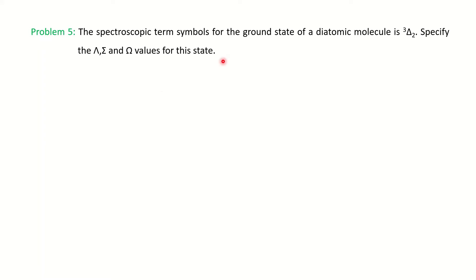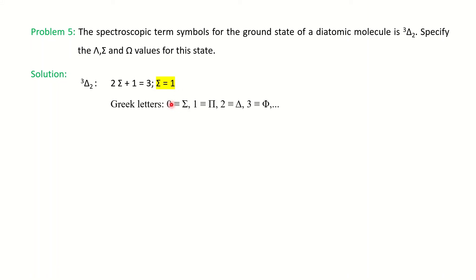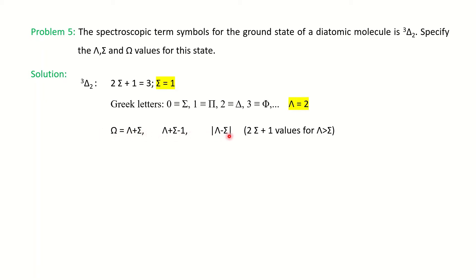Final problem: given a term symbol, find λ, Σ, and Ω. For example, with a ³Δ term: 2S+1=3 so S=1; Δ means λ=2. The total angular momentum Ω = |λ+Σ| taking all positive values down to |λ−Σ|, giving values 3, 2, 1. If Ω=2 is specified, then Σ=1 (Σ=Ω−λ=2−2=0... adjusted: Σ=1, λ=2, Ω=2).